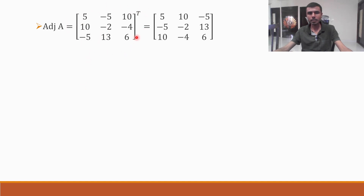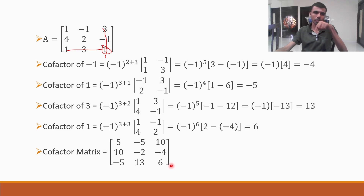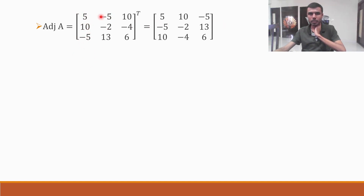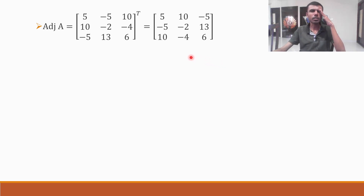After this, I need to find out adjoint A. Adjoint A is nothing but the transpose of the cofactor matrix. So the rows become columns: [5, 10, -5; -5, -2, 13; 10, -4, 6].